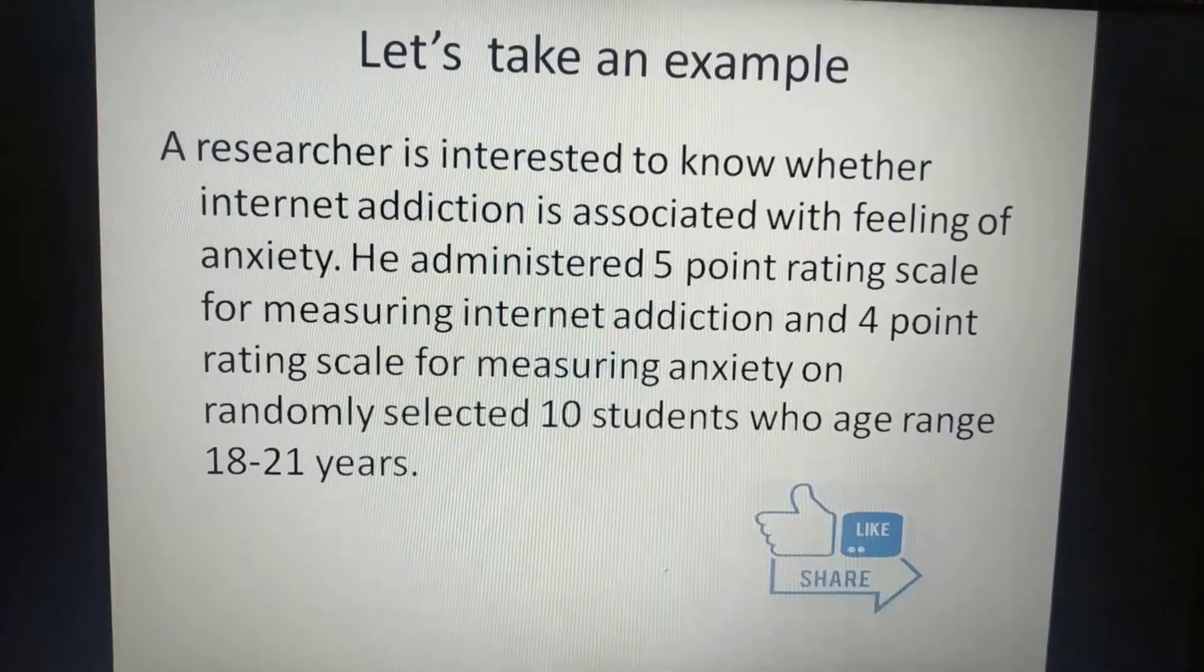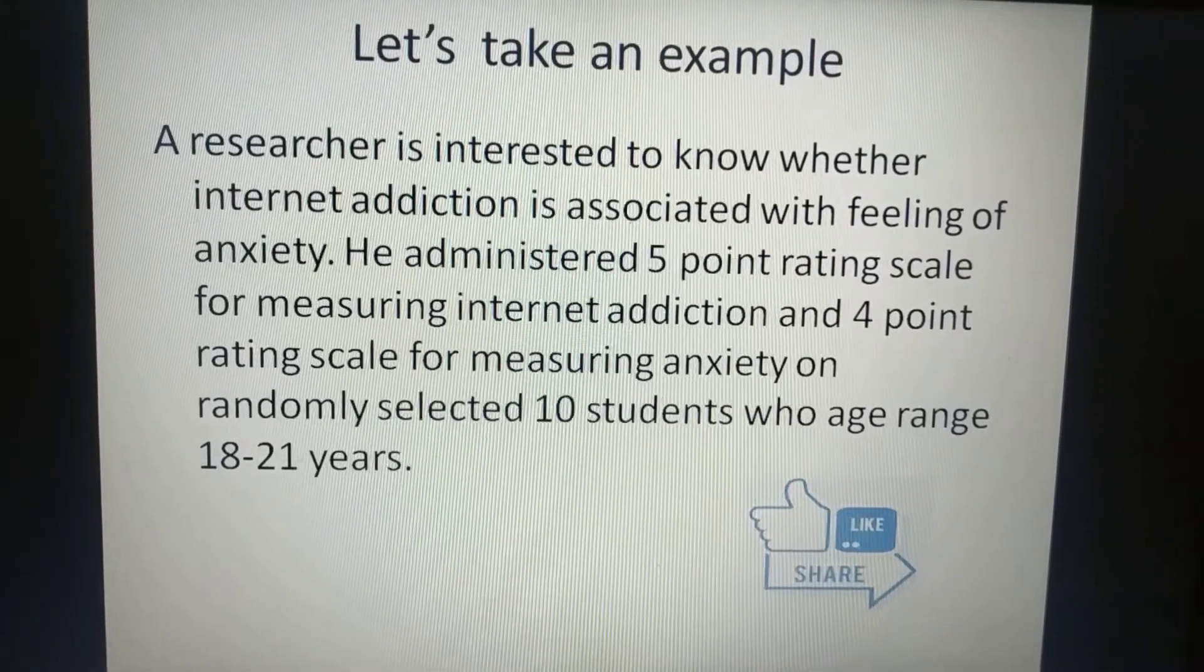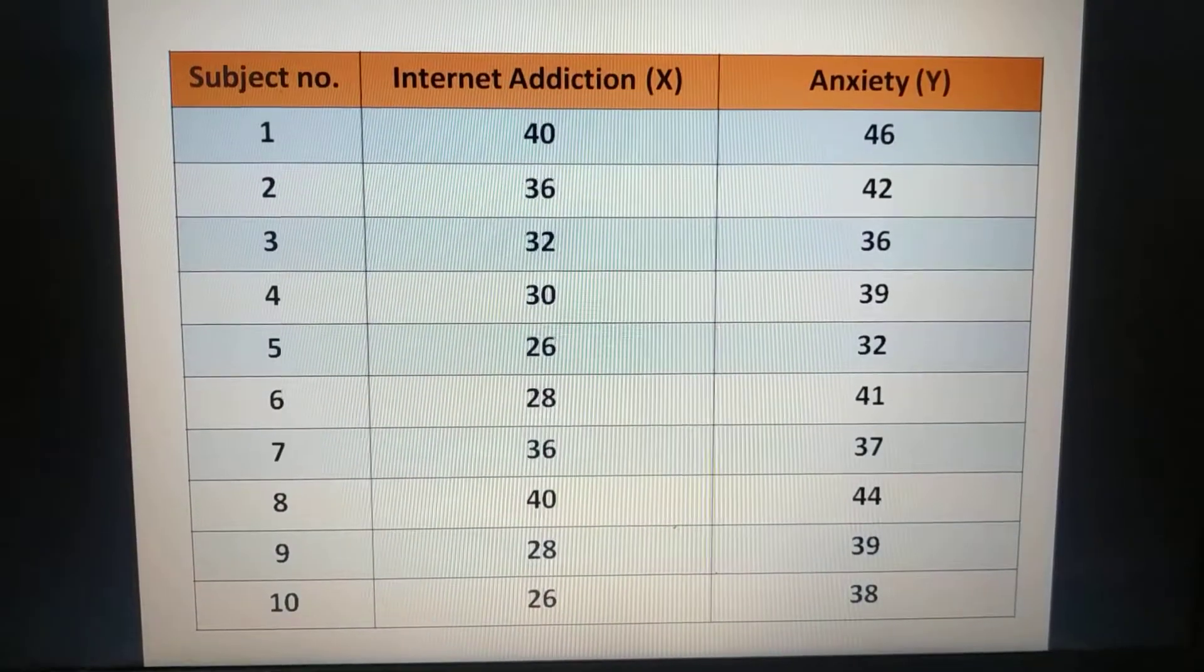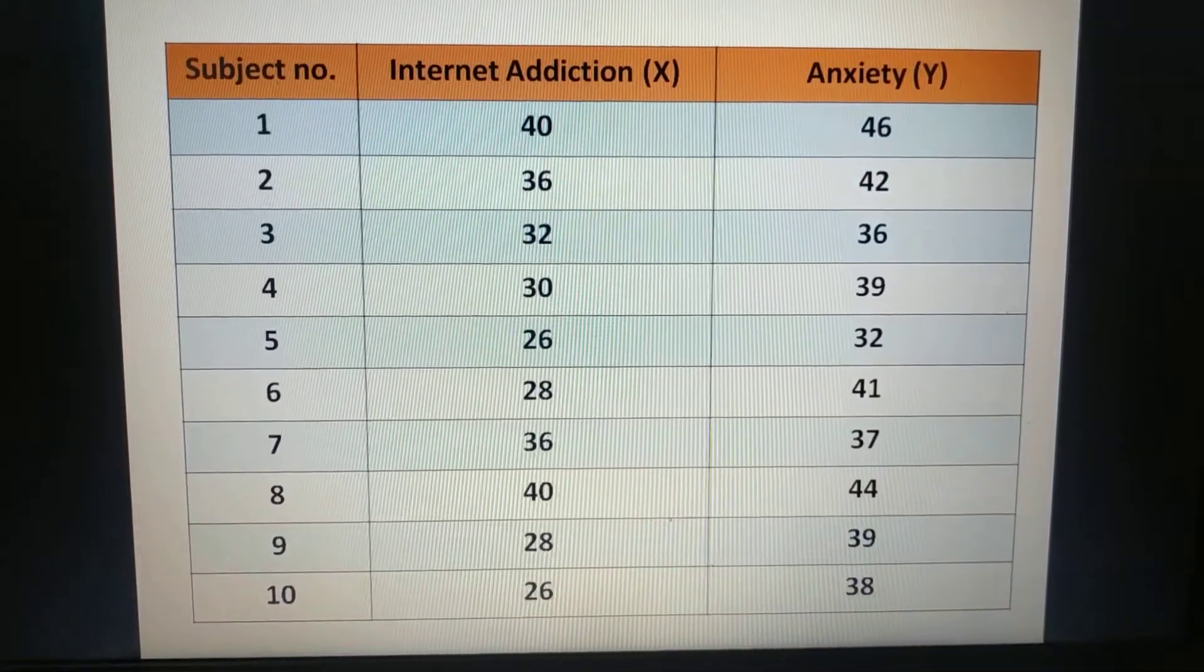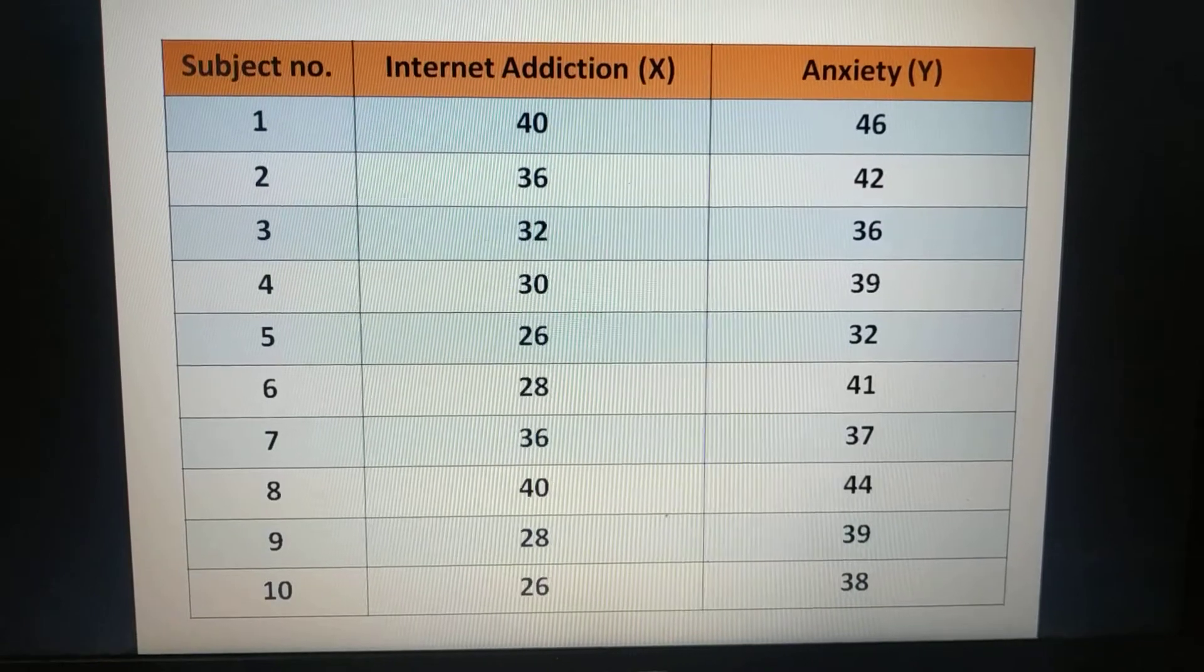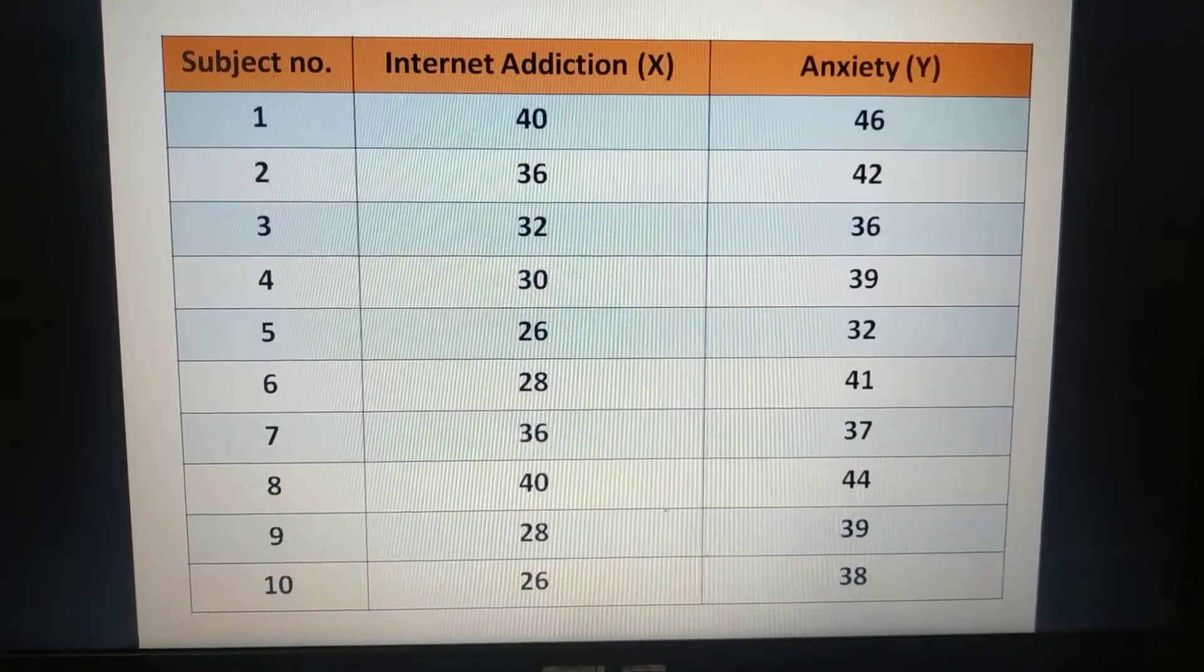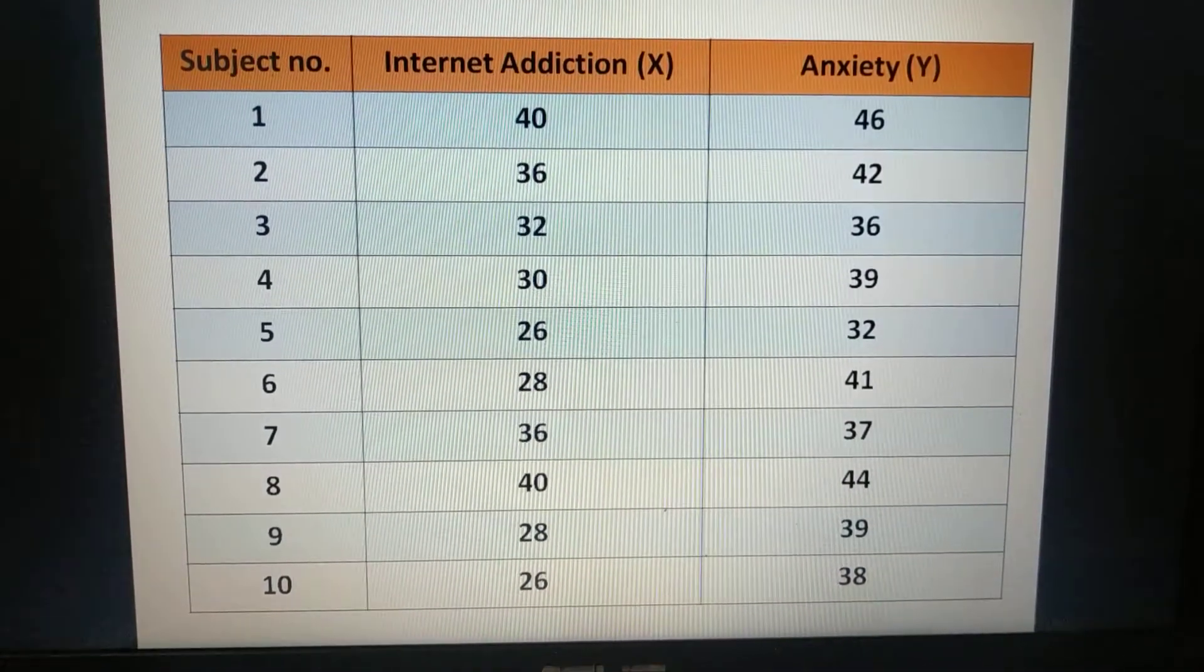He administered 5 point rating scale for measuring internet addiction and 4 point rating scale for measuring anxiety on randomly selected 10 students whose age range was 18 to 21 years. Here you can see raw data of 10 subjects on internet addiction i.e. X and anxiety i.e. Y.